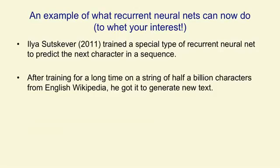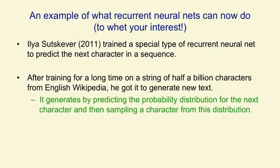He actually used 86 different characters to allow for punctuation and digits and capital letters and so on. After he trained it, one way of seeing how well it can do is to see whether it assigns high probability to the next character that actually occurs. Another way of seeing what it can do is to get it to generate text. You give it a string of characters and get it to predict probabilities for the next character, then you pick the next character from that probability distribution.